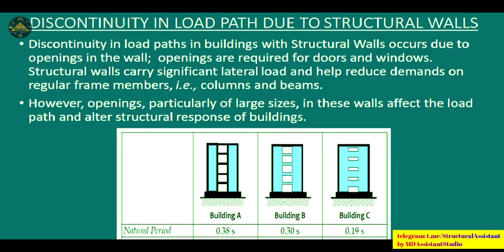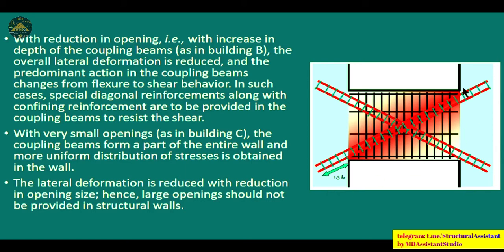Discontinuity in load path can also arise from openings in structural walls. Large openings affect the load path and alter the structural response of the building. The region between two structural walls with an opening must be designed as a coupling beam, often using diagonal reinforcement. Reducing the opening size — that is, increasing the depth of the coupling beam — reduces overall lateral deformation. With very small openings, the coupling beam effectively becomes part of the entire wall, resulting in more uniform stress distribution.